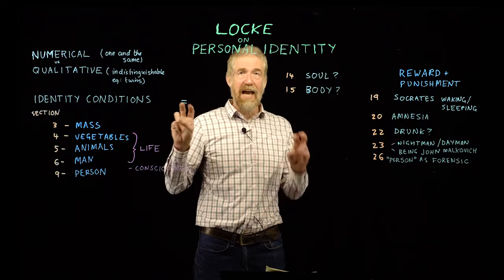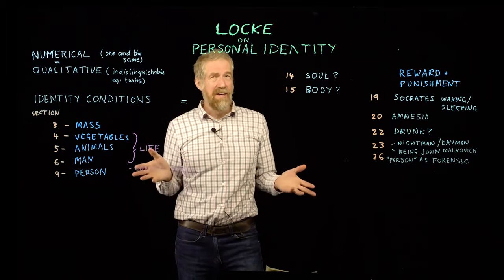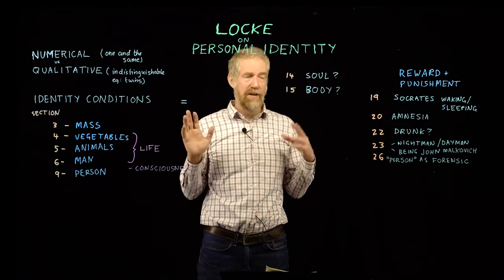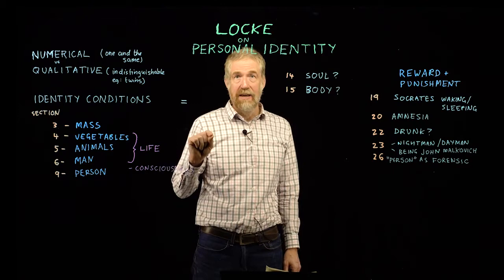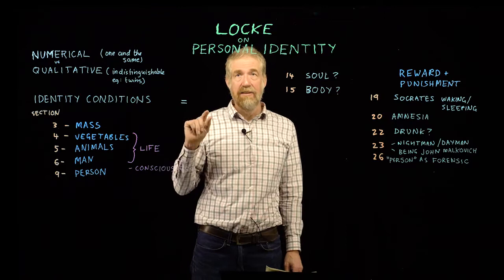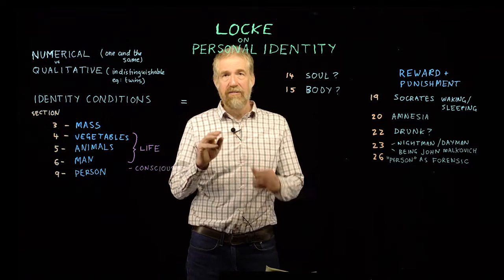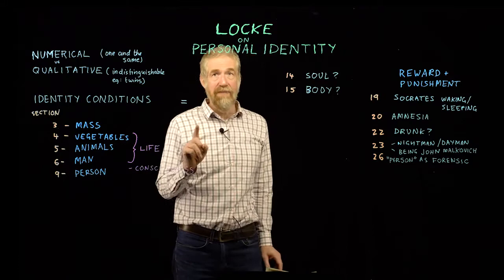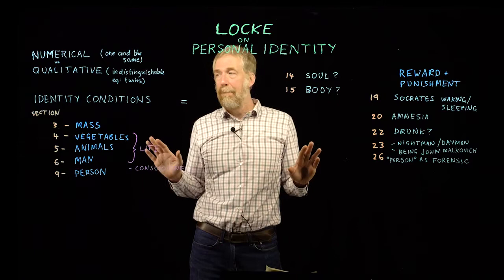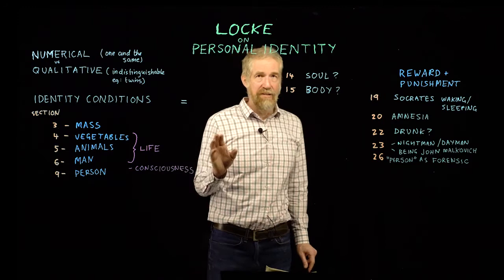The answer he gives is: if the acorn partakes of the same continuous life. What he means is there is no point at which the acorn died and a new life started. Because if the acorn died and a new life started, then the acorn is not the same plant as the tree that results - there's a gap in the life. But so long as the same life is continuing, you've got the same plant, even though the oak tree is probably made of completely new atoms than the acorn was.